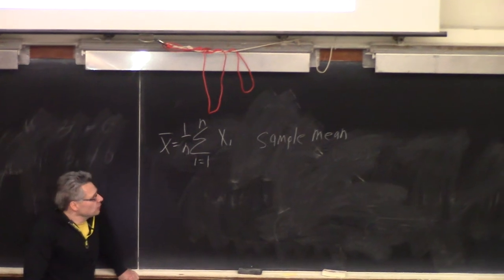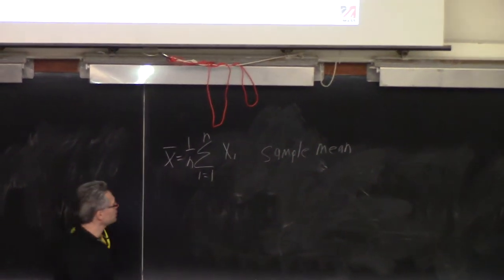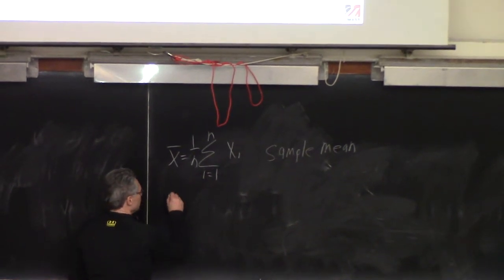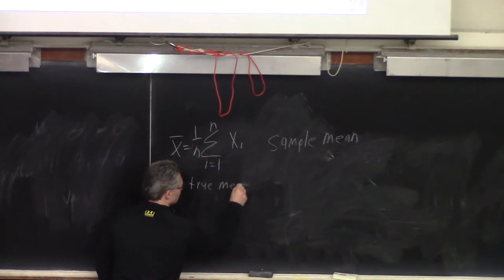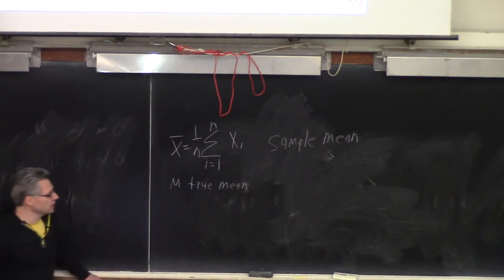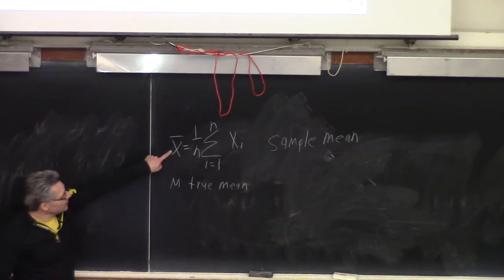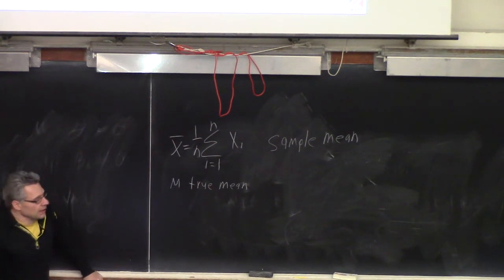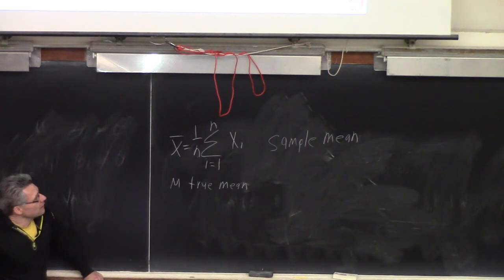If you want to calculate the mean and you have two samples, that's probably not a good idea. Associated with this is something called the true mean. Underlying the data, there's some probability distribution function that you usually don't know, but there's some true mean. What we'd like is the sample mean to be near the true mean, and we have a feeling that the more samples we get, the better. This idea of confidence intervals kind of quantifies this.